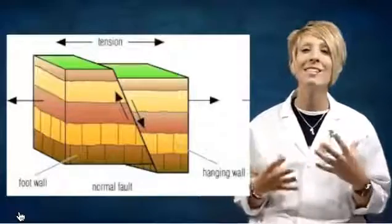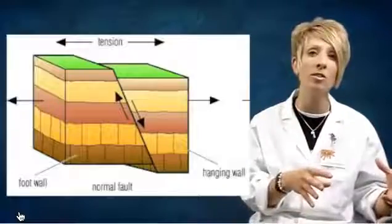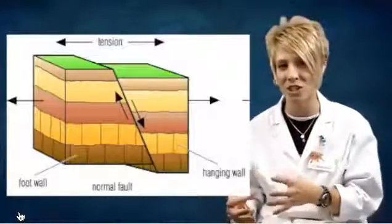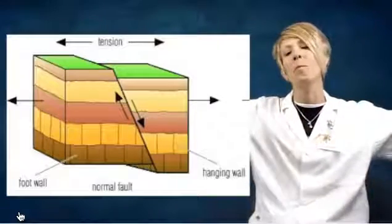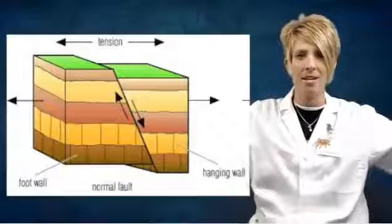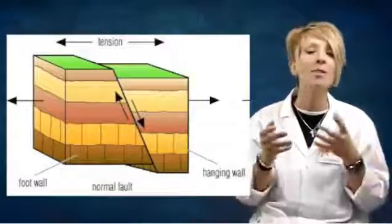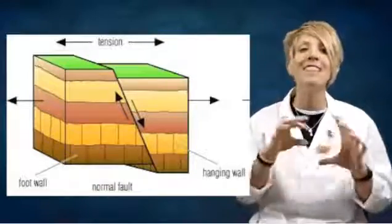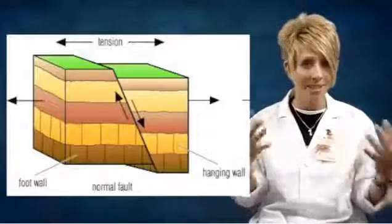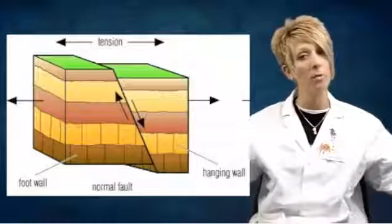The first fault is called a normal fault. This is created by a force called tension — make sure you remember that. Tension is what happens when you take a rope and pull really hard on both sides of it. So what happens with rocks is when the rock gets stretched out, it becomes thin in the middle. This happens at divergent boundaries because the plates are moving away from one another.